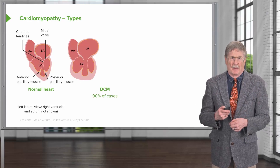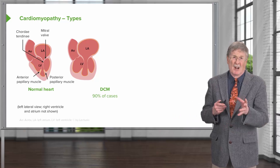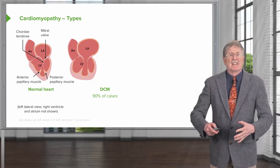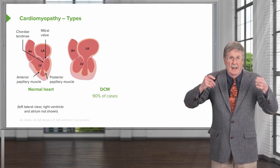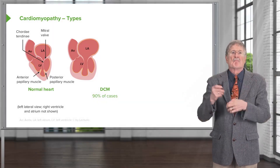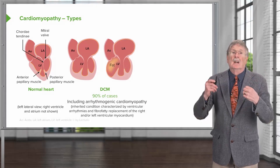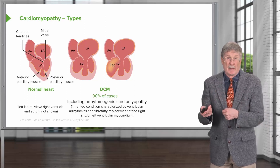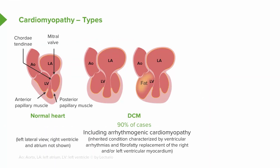In dilated cardiomyopathy, we see a globoid dilation of the heart — this is actually the most common cause, roughly 85 to 90 percent of cases. With chamber dilation, the papillary muscles are pulled apart, tugging on the chordae tendineae and opening the mitral valve, resulting in marked left atrial dilation. This category also includes arrhythmogenic cardiomyopathy, previously called arrhythmogenic right ventricular cardiomyopathy because it predominantly affects the right ventricle.